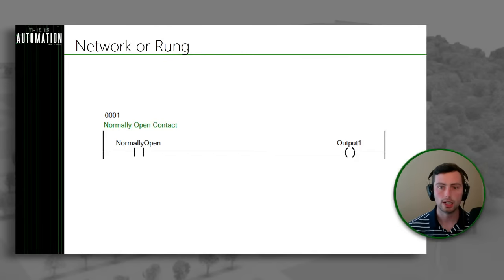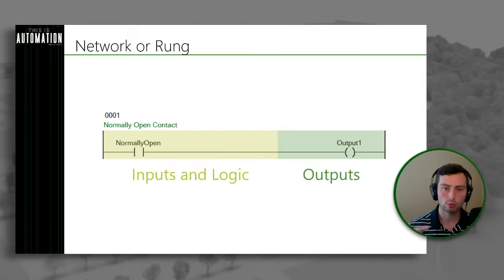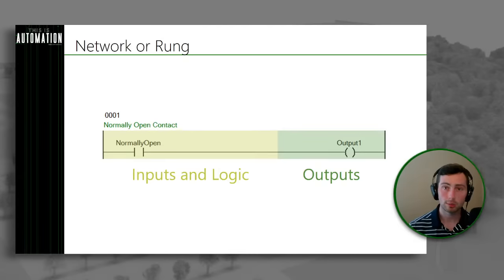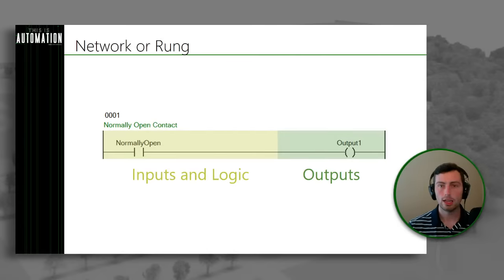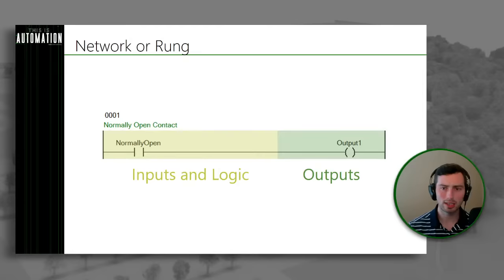Let's start diving into exactly what is inside of these rungs. When we're looking at a rung, on the left-hand side we're going to have our inputs and logic. Those inputs could be coming directly from an I/O module, for example, or it could be an internal variable. And then on the right-hand side we have outputs. Our outputs could be tied directly to an I/O module, an output module, or it could be an internal variable that we're using for something else. Ultimately, again, we're just taking inputs, applying logic, and getting outputs.